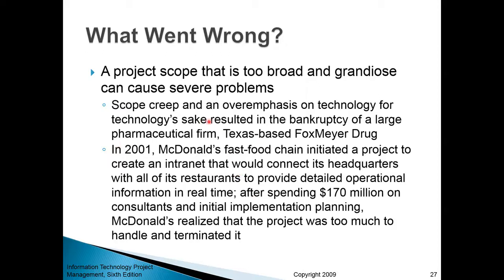One lesson is to do things on a small scale first. Don't try to implement ERP across the entire organization — try a small department or a single module like the financial module first, before rolling out the entire system. Similarly, McDonald's could have tried implementing the intranet for one city or state first, learned from mistakes, and then rolled it out to other locations. Starting small is a good solution to scope creep — where scope gets out of control and the project fails, sometimes resulting in serious organizational problems including bankruptcy.